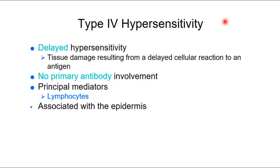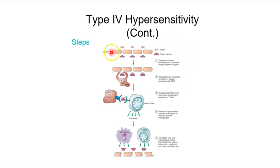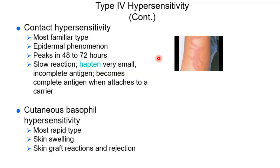Type 4 hypersensitivity is a delayed hypersensitivity most often associated with the epidermis and skin. It's distinct because lymphocytes are the principal players in this immune pathway. Haptins — molecules found in the skin — when combined with a larger protein can initiate antibody production, which is why type 4 hypersensitivities are often associated with skin. Examples include reactions to cheap jewelry metals or switching laundry detergents.